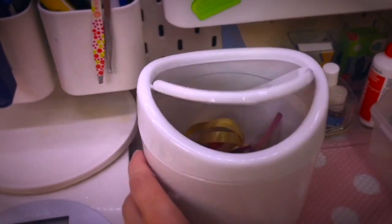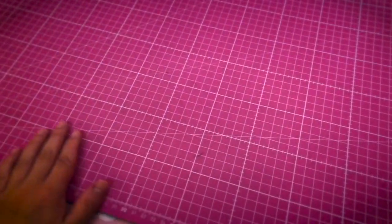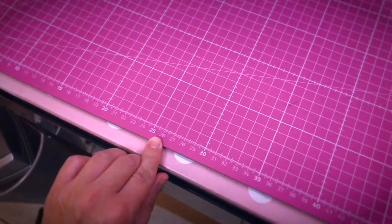A scale for weighing packages and a self-healing mat with measurement markings. This is very useful when you need to cut paper and very heat resistant as well if you need to shrink wrap.